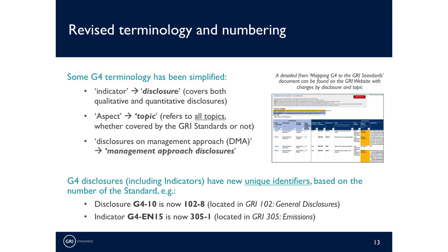Following the new structure and numbering system, each disclosure has been renumbered based on the number of the standard where it can be found. For example, disclosure G410 on employees from G4 is now called Disclosure 102-8 and it is the eighth disclosure in GRI 102 General Disclosures. All of this information on disclosure content and numbering can be found in our detailed mapping document, which is available for free on the GRI standards website.